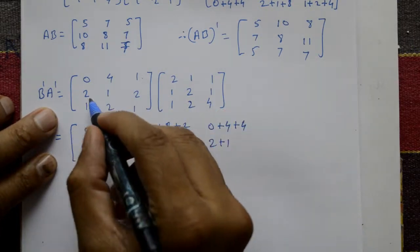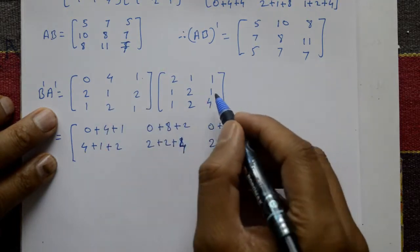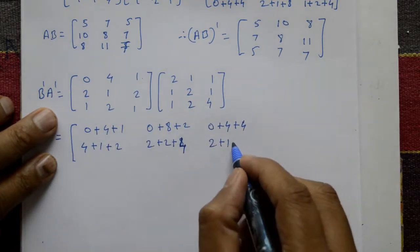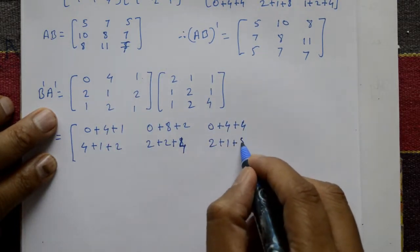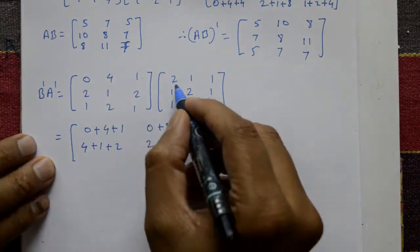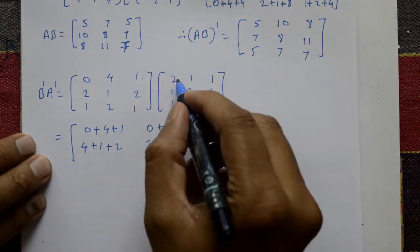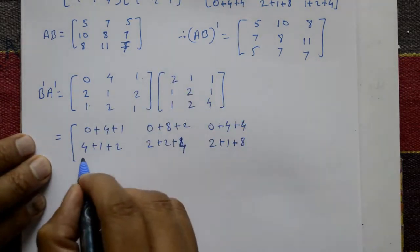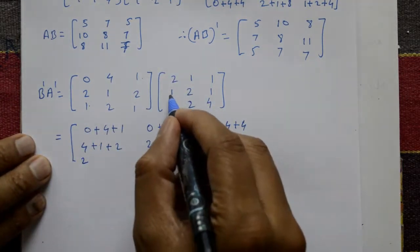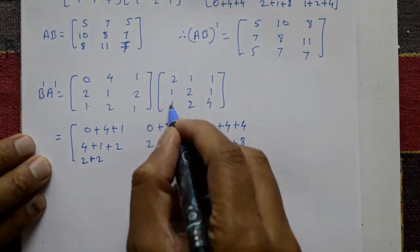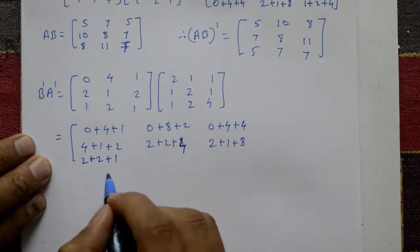Second row, third column: 2×1 = 2, plus 1×1 = 1, plus 2×4 = 8. Third row, first column: multiply 1×2 = 2, plus 1×1 = 1, plus 1×8 = 8.